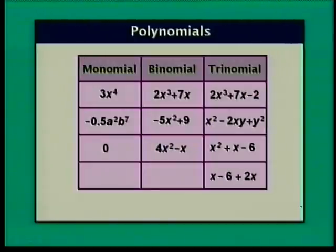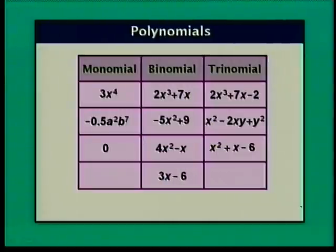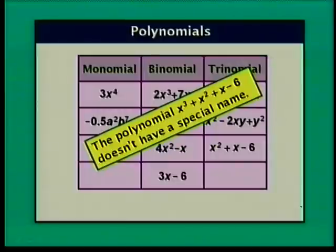x minus 6 plus 2x technically has three terms: x, negative 6, and 2x. But notice there are like terms that can be combined — we can rewrite this as 3x minus 6, so it's not a trinomial but rather a binomial. The polynomial x cubed plus x squared plus x minus 6 doesn't have a special name since it has four terms and polynomials with more than three terms don't have a special name.